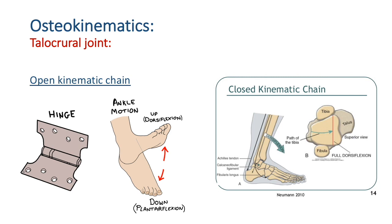Dorsiflexion and plantar flexion occur in the sagittal plane and coronal axis. The range of motion is about 20 degrees of dorsiflexion and 0 to 50 degrees of plantar flexion. Before moving on to arthrokinematics of the talocrural joint, we need to understand that the surface of the talus which articulates with the tibia is convex, whereas the tibial surface which articulates with the talus is concave.